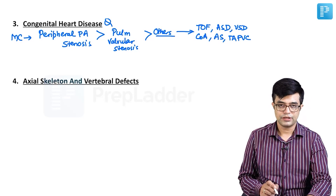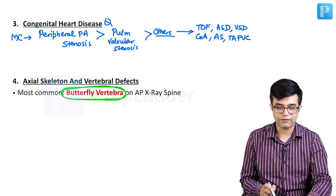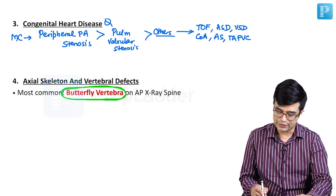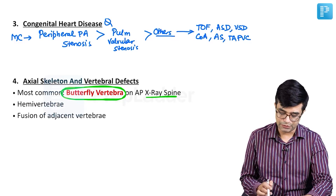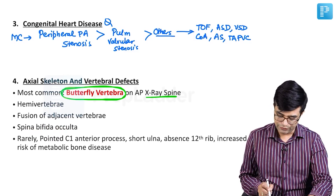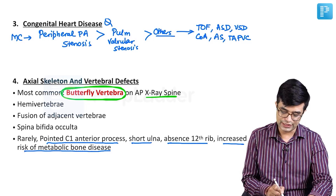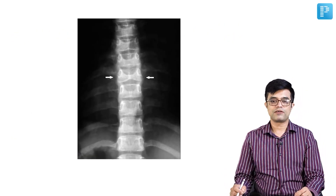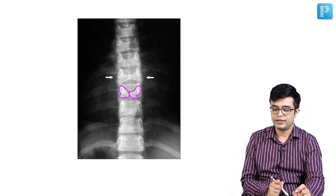Fourth is axial skeleton and vertebral defects. The classic hallmark finding is the so-called butterfly vertebra. Butterfly vertebra gives the appearance of butterflies because the anterior laminae sometimes fail to fuse, producing concavities. This is visible on X-ray of the spine in anteroposterior view. Other vertebral anomalies include hemivertebrae, fusion of adjacent vertebrae, and spina bifida occulta. Rarely, a pointed C1 anterior process, short ulna, absence of the 12th rib, and increased risk of metabolic bone disease may be found.